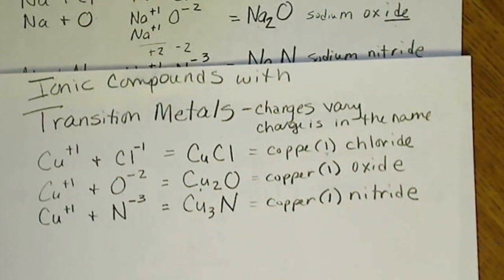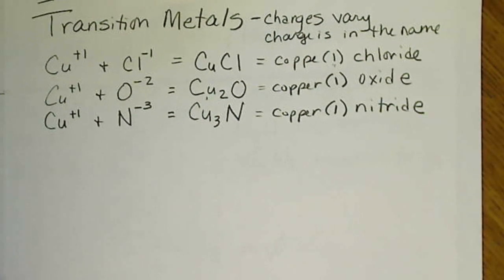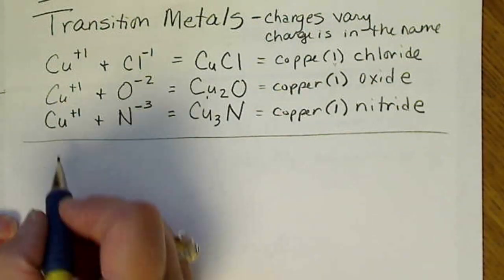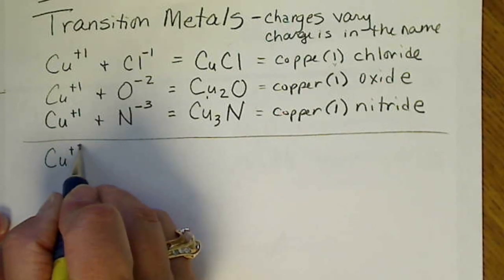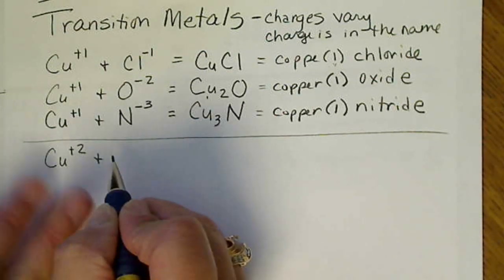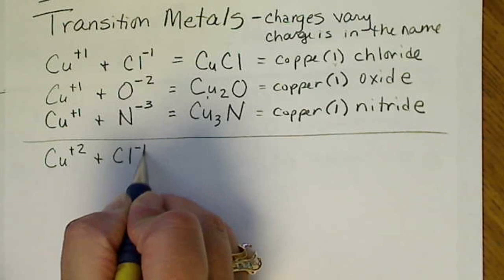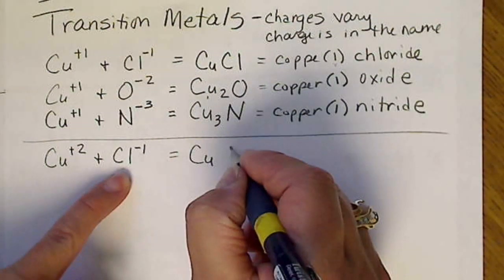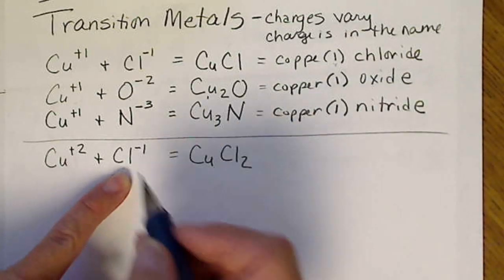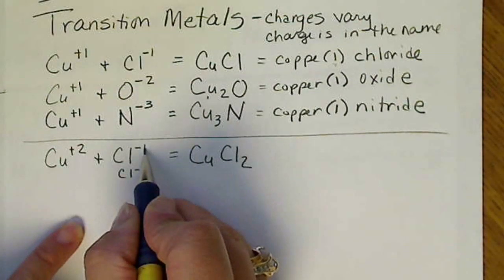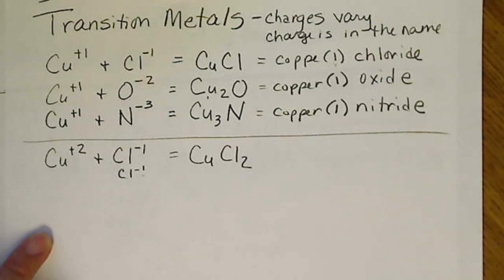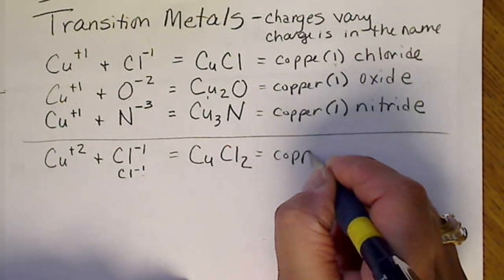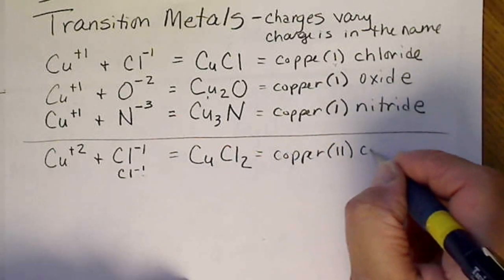Now I'm going to do some examples with copper plus 2. So copper can have variable charges, and sometimes it's a plus 2. So I'm going to put this together with chloride, and we're going to get 1 copper and 2 chlorides, because it takes 2 minus 1 charges to cancel the plus 2. The name of this is copper 2 chloride.